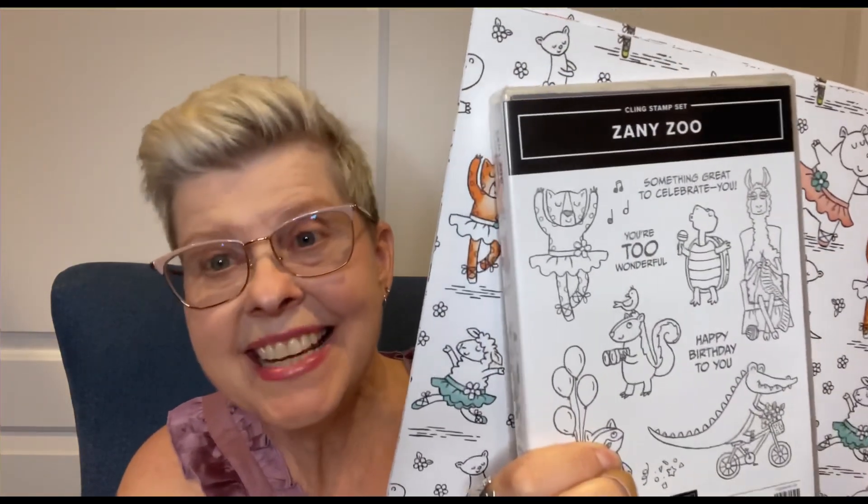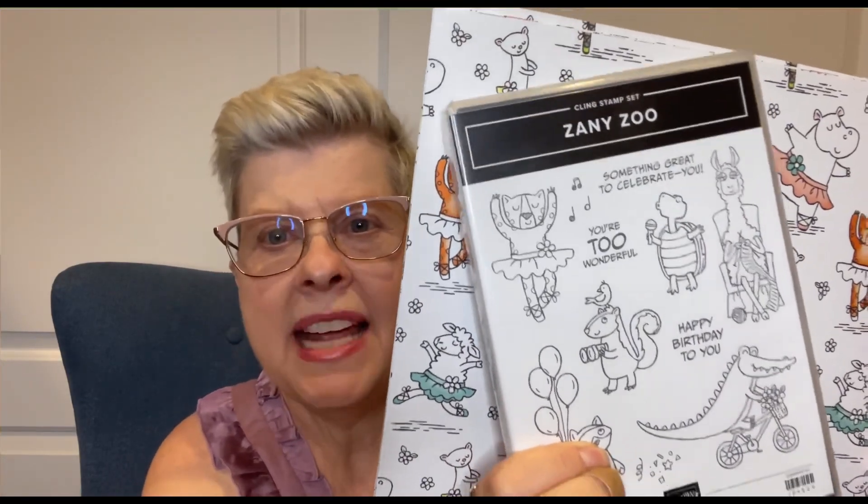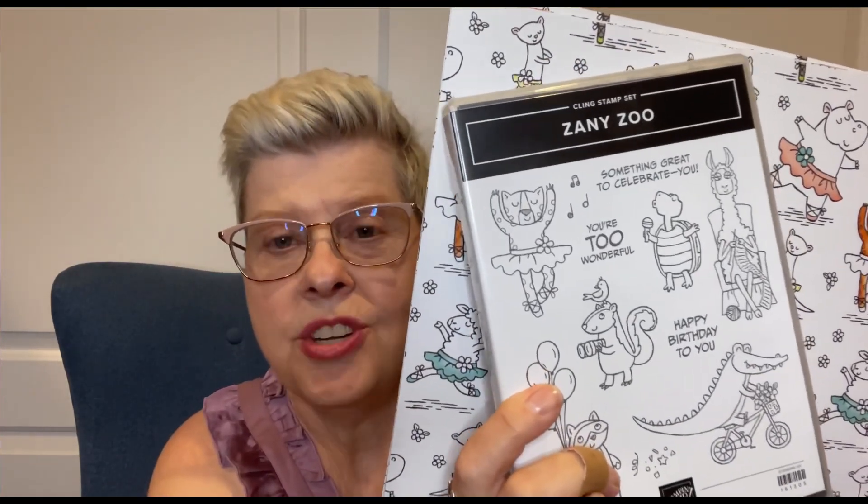Let me show you a couple things we're going to be using. We're going to be using this fantastic paper. It's so adorable with all the little animals. There are several different sheets with different animals in this paper pack. And then also we are going to be using the Zany Zeus stamp set and the dies, the coordinating dies. You'll see some of the animals here that you can stamp and color. If you don't want to color, you can use the dies to cut out some of these animals and make a really quick and easy card.